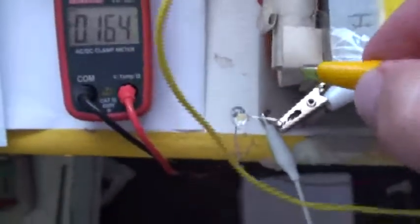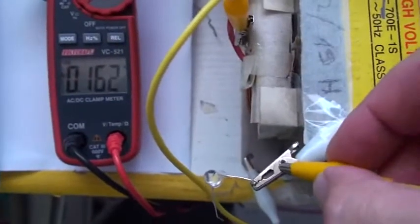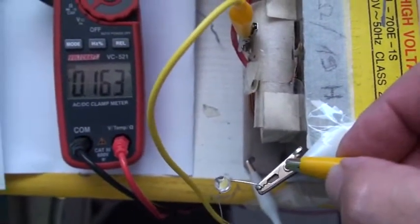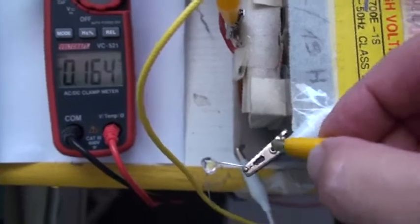Now we go to the confirmation here on the voltmeter and I will short. I short now. You see that the image of the current in voltage goes down.